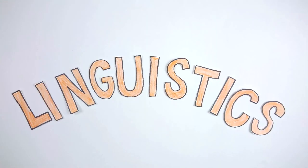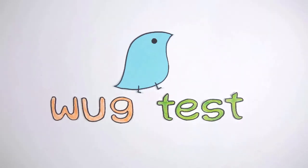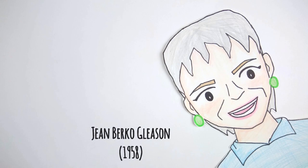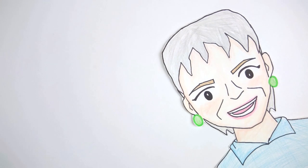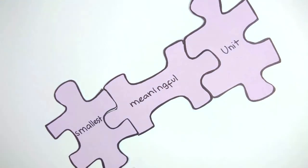A well-known experiment in the field of linguistics is the WUG test. The WUG test was conducted by Jean Berko Gleason in 1958. It explored how children learn their first language in terms of English morphemes. A morpheme is the smallest meaningful unit of a language that constructs words.